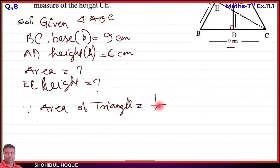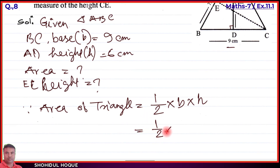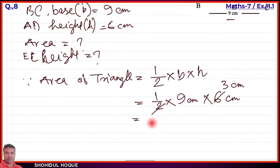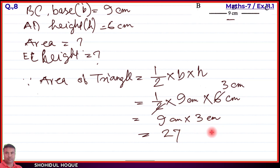Area of triangle equals half into base into height. We substitute: half into 9 centimeters into 6 centimeters. Half into 6 gives us 3 centimeters. Then 9 multiplied by 3 equals 27. So the area equals 27 square centimeters.